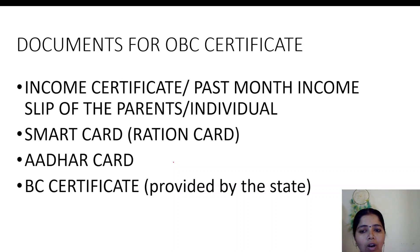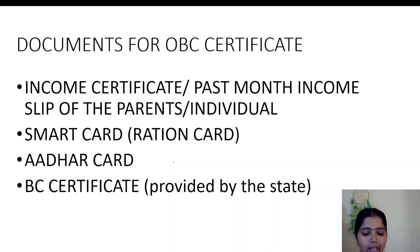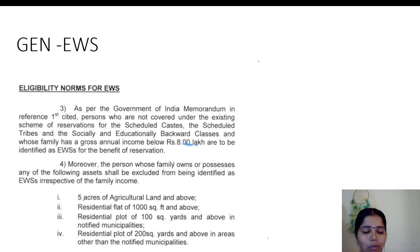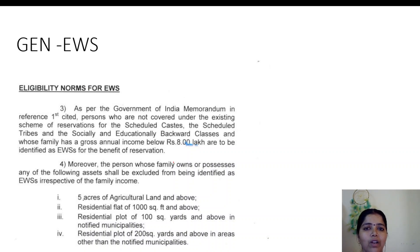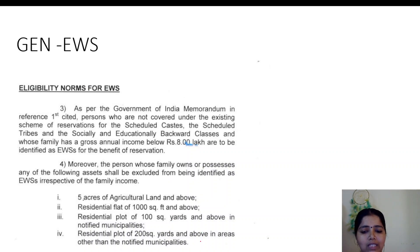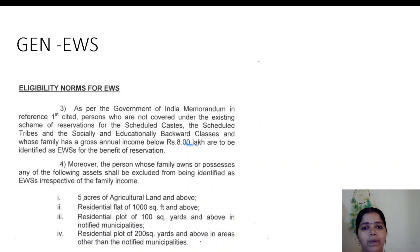These are the documents that we have to carry to get our OBC NCL — that is, Non-Creamy Layer — certificate. Next, regarding General EWS: General EWS is a category for people who do not come under SC, ST, or OBC — they come only under the general category — and they have an exemption with respect to their family annual income. If they meet the given conditions and do not exceed those limits, they will be eligible to get the EWS certificate. By submitting the above-mentioned documents, we will be getting the EWS certificate. This is applicable only for the general category, not for BC, SC, or ST.